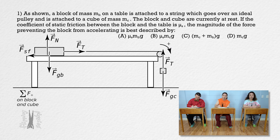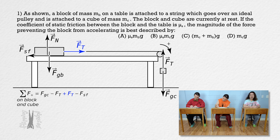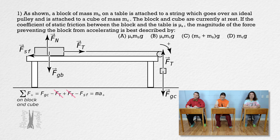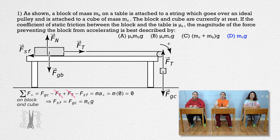Summing the forces on the block-cube system in the positive direction: the force of gravity on the cube is positive, minus the tension on the cube, plus the tension on the block, minus the force of static friction on the block. The two tension forces cancel out. Since acceleration is zero, the force of static friction equals the force of gravity on the cube, which equals m_c times g. So choice D is the correct answer.